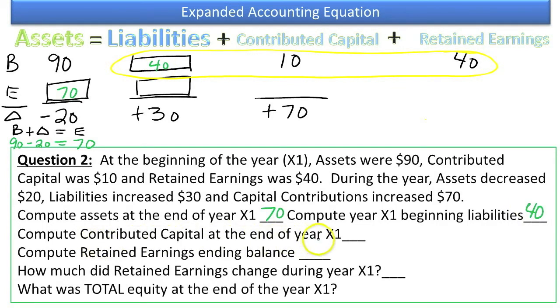Compute beginning liabilities. Compute contributed capital at the end of the year X1. We know the beginning to be $10. We know the change of $70. Therefore, the ending contributed capital must be $80.